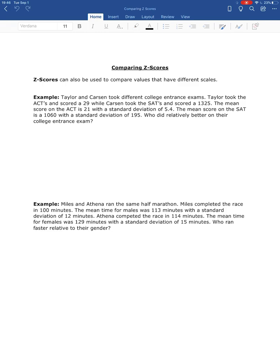So for the first example, Taylor and Carson took different college entrance exams. Taylor took the ACT and scored a 29, while Carson took the SAT and scored a 1325. The mean score on the ACT is 21 with a standard deviation of 5.4. The mean score on the SAT is 1060 with a standard deviation of 195. Who did relatively better on their college entrance exam?